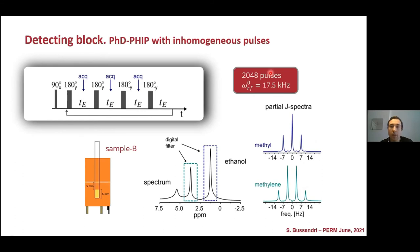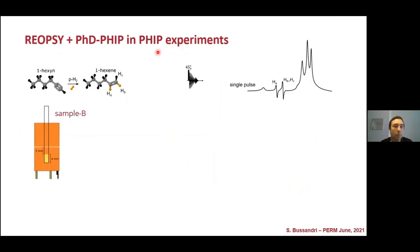So finally, we can go to the hyperpolarized sample. Hydrogen enriching the para state was bubbled in a mixture of 1-hexene, deuterated acetone, and a rhodium catalyst to create a hyperpolarized 1-hexene. It was put in the sample B configuration, remember it was in the inhomogeneous region of our coil, placed here 5 millimeters below the center.